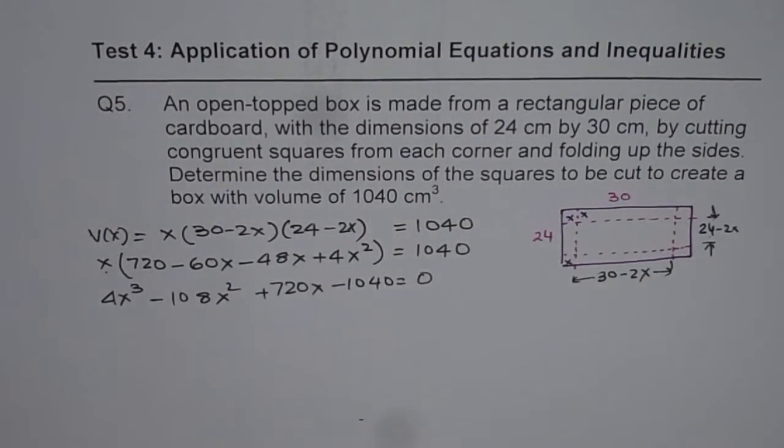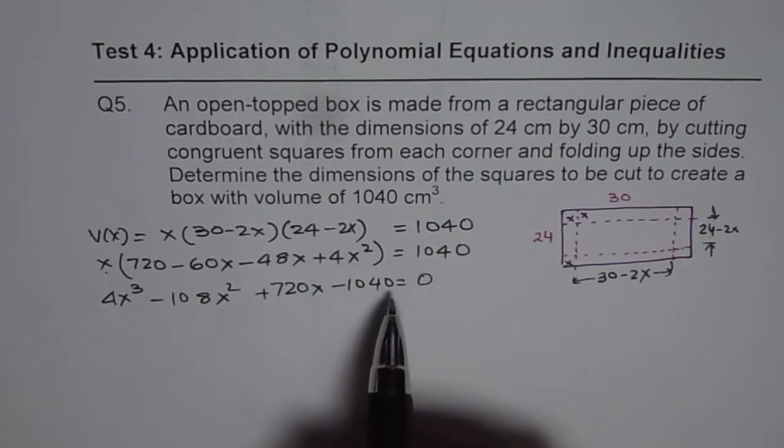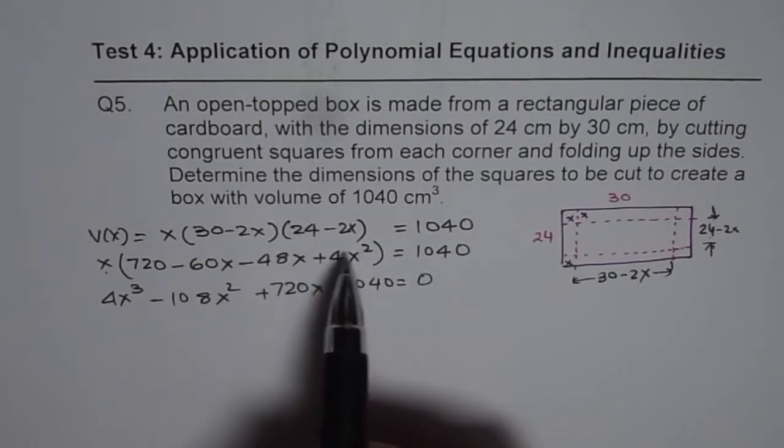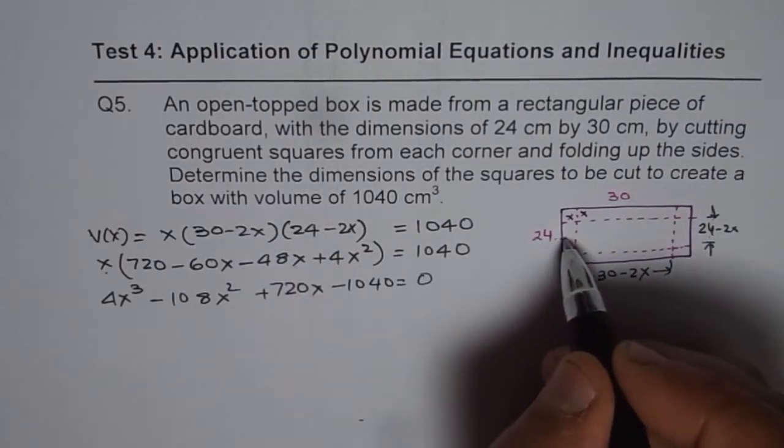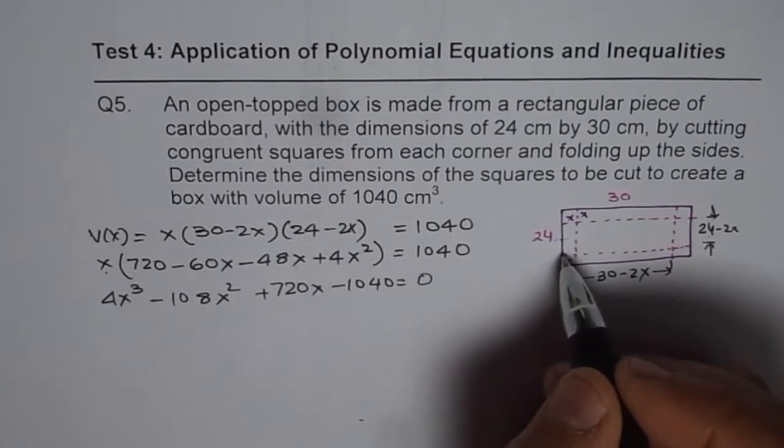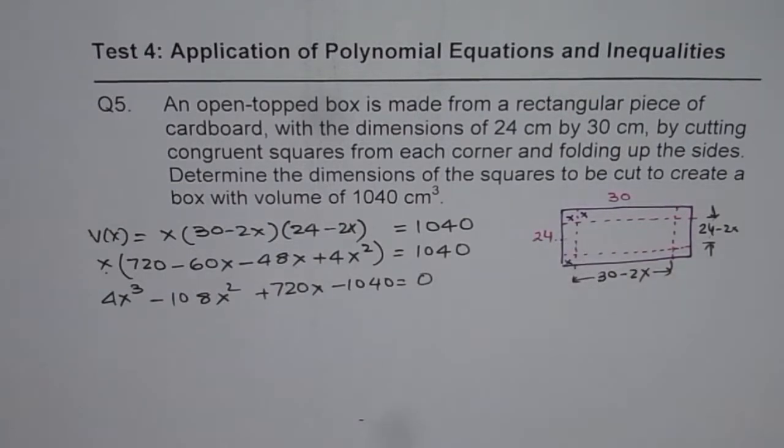Now, that is the polynomial equation to be solved. So, we will insert some values of x, which should be positive. Also, remember one thing. That in this particular case, x cannot be more than 12. Since, if width is 24, 12 will be like half of it. Correct? So, we cannot cut a square more than that.